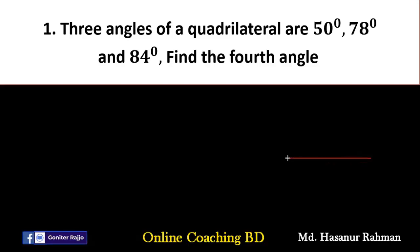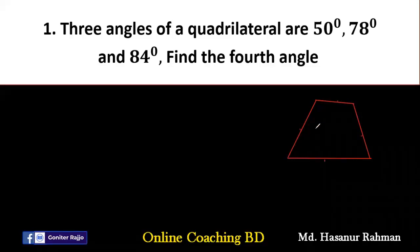In this quadrilateral, only 3 angles are given. If I draw this type of quadrilateral, it has 4 sides — 1, 2, 3 and 4 — and 4 angles. Suppose this one is 50 degrees, this one is 78 degrees, and this one is 84 degrees. Then what will be the 4th angle? We have to find out the 4th angle.